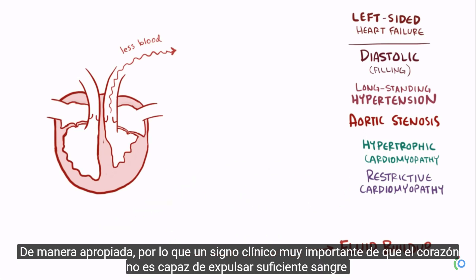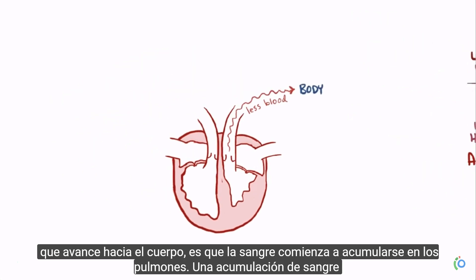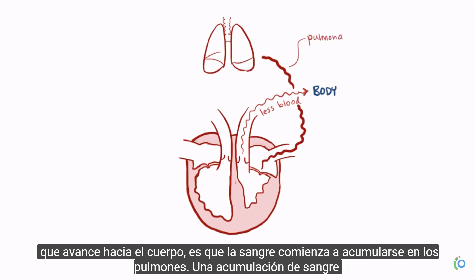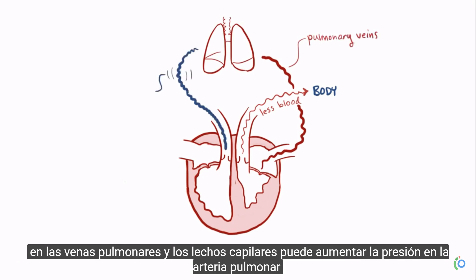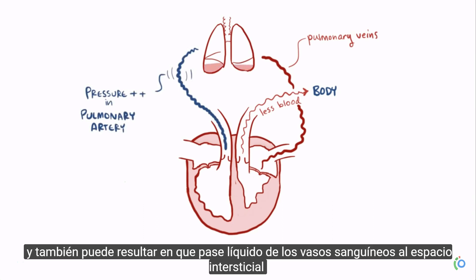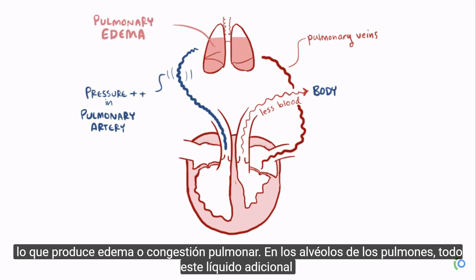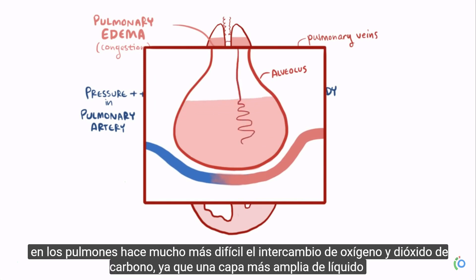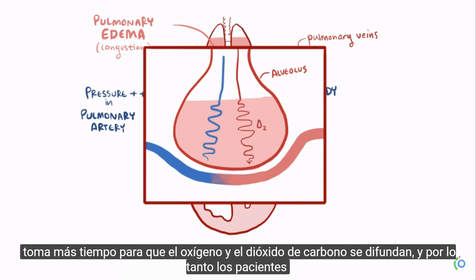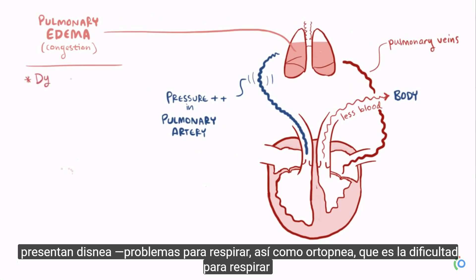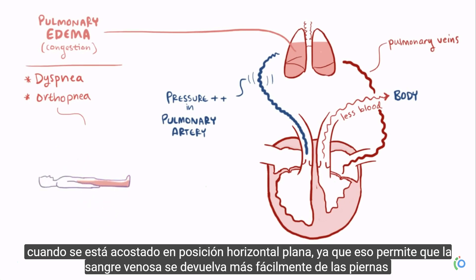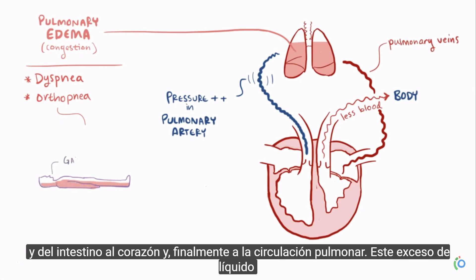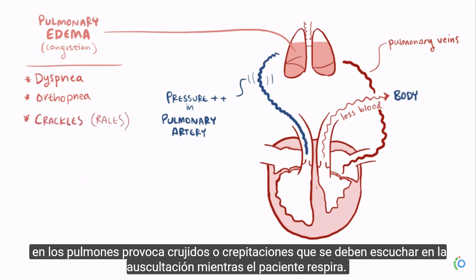A major clinical sign of the heart not being able to pump enough blood forward is that blood backs up into the lungs. A backup in the pulmonary veins and capillary beds increases pressure in the pulmonary artery and can result in fluid moving into the interstitial space, causing pulmonary edema. In the alveoli, this extra fluid makes oxygen and carbon dioxide exchange harder, causing dyspnea, or trouble breathing, as well as orthopnea — difficulty breathing when lying flat — since that allows venous blood to more easily return from the legs and gut. Crackles or rales are heard on auscultation.